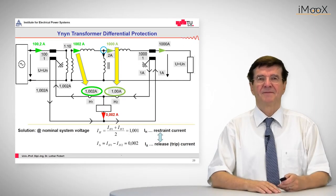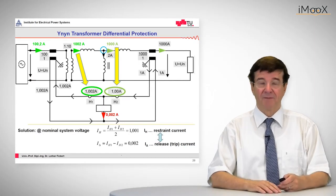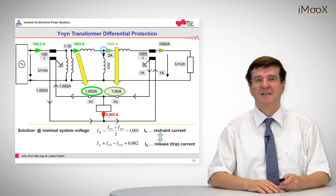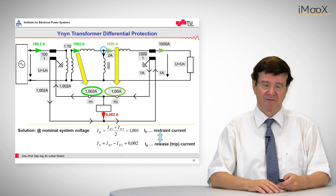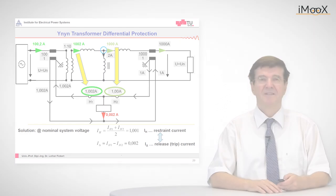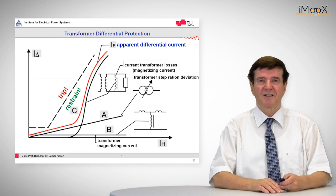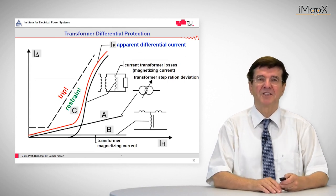So in this case it was shown that the magnetizing current of a current transformer leads to some apparent differential current. So there are other sources for apparent differential currents that may appear in the operation of the object.